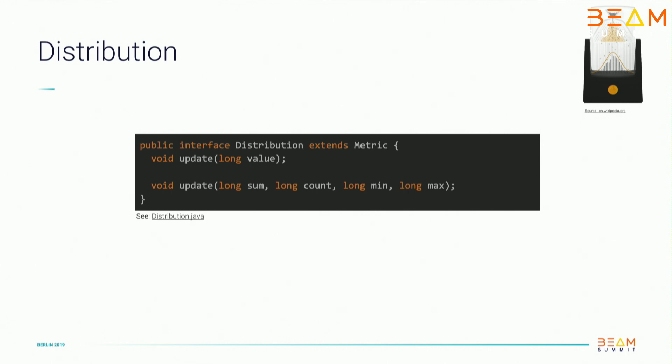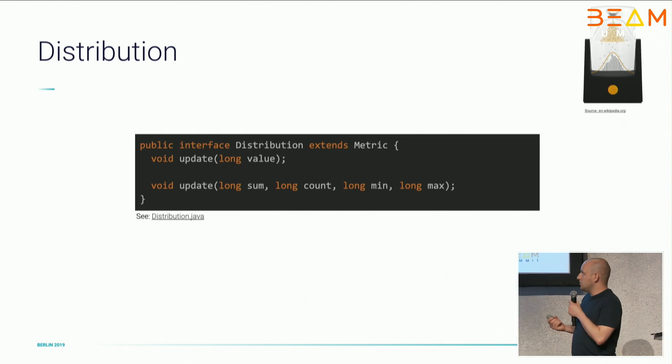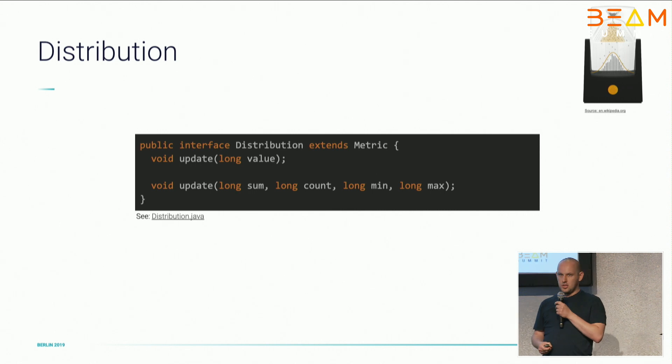And then there's distribution. Distribution holds the statistical distribution of all the reported values. So if you want to have minimum or maximum value calculated out of all reported values, or some sum, that would be the metric type you would use.